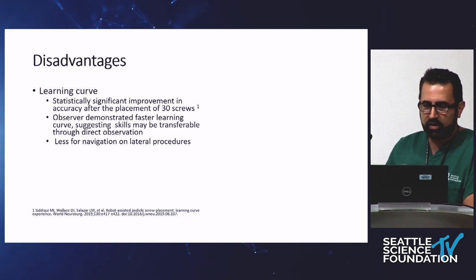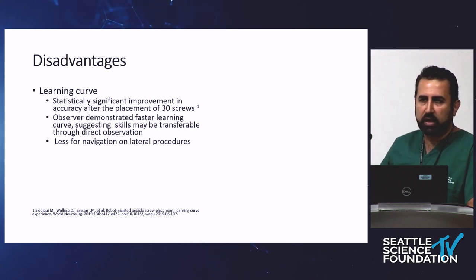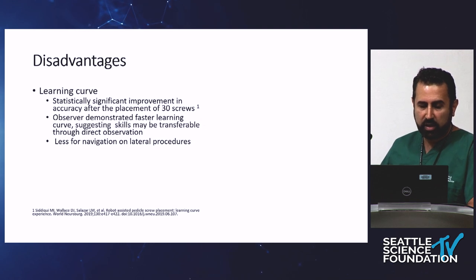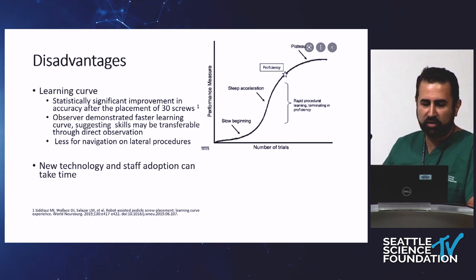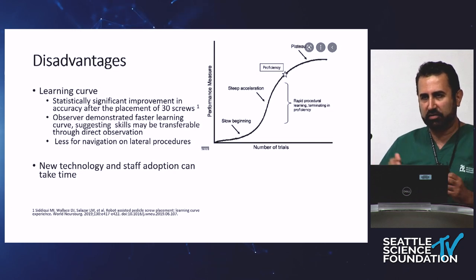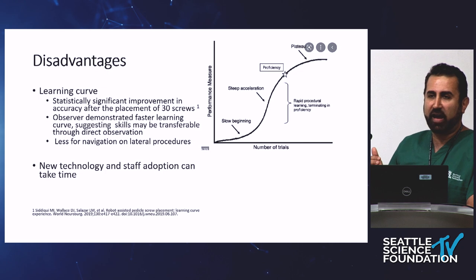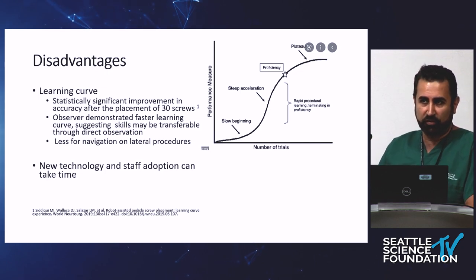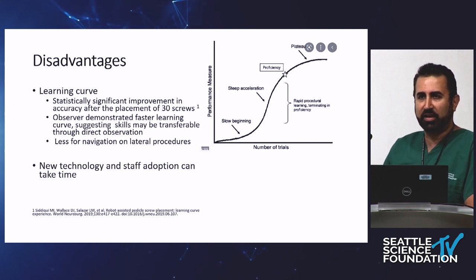To be fair, we need to address disadvantages as well. There is a steep learning curve because it's new technology and there are many factors that can slow down or create troubleshooting issues throughout a case. We've found there's about a 30-screw inflection point at which there's significant improvement in accuracy on behalf of the operator. Interestingly, in a study where observers watched cases before placing screws themselves, they showed significantly faster and more transferable skill acquisition compared to going fresh to robotic placement — so it's also easy to teach.